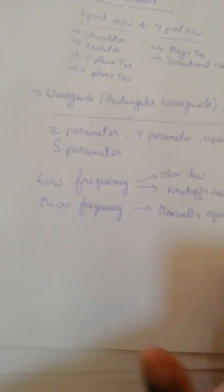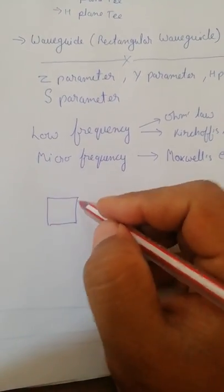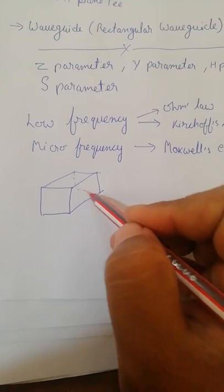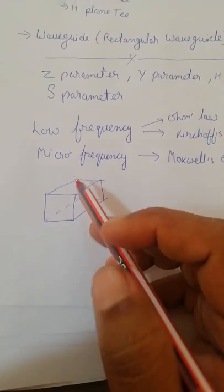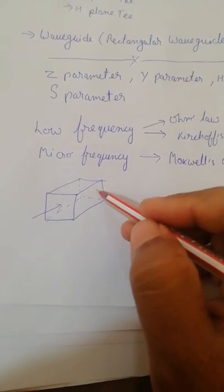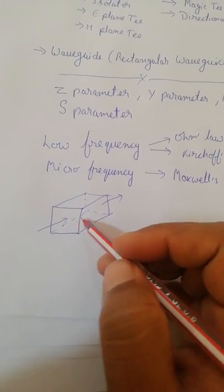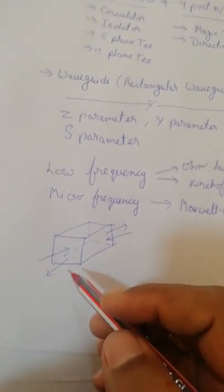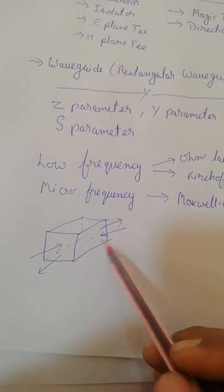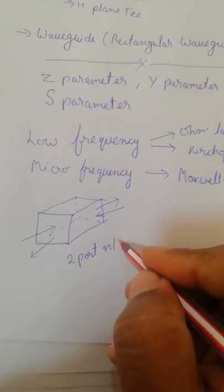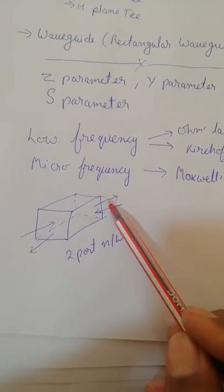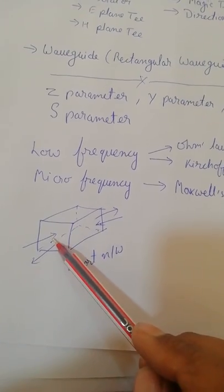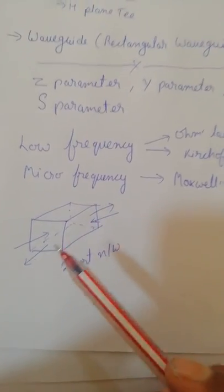Now I will tell you what a port is. You have seen a rectangular waveguide — it looks like this. You can give input at one port and take output at the other port, or you can reverse it. This type of thing is called a two-port network, where you have two ports: one for input and one for output.